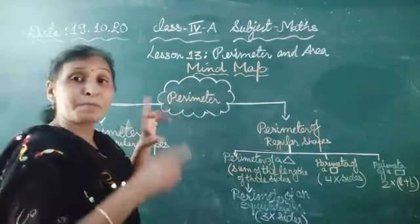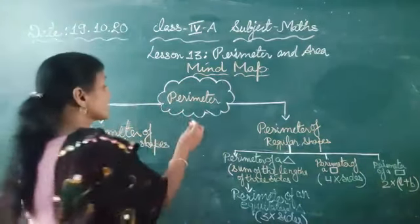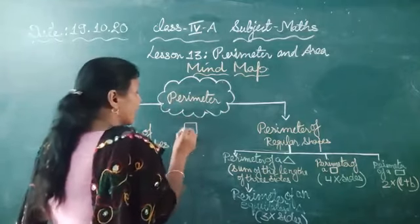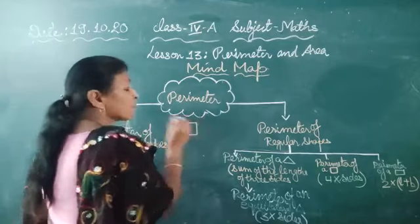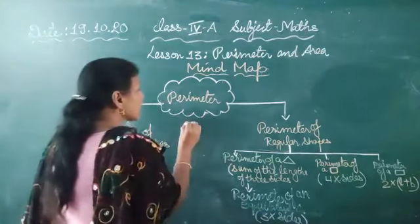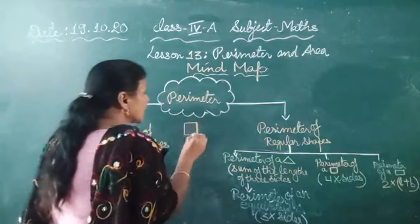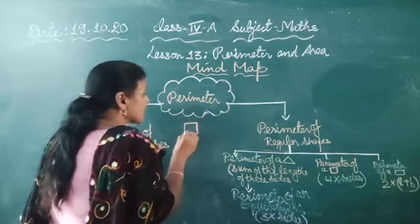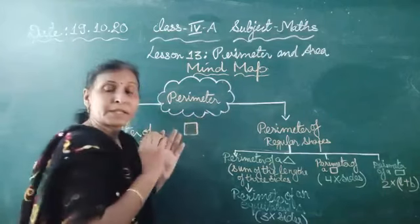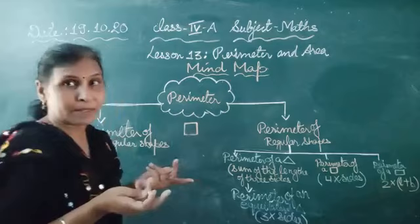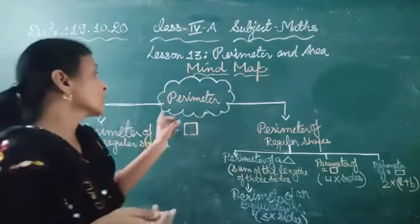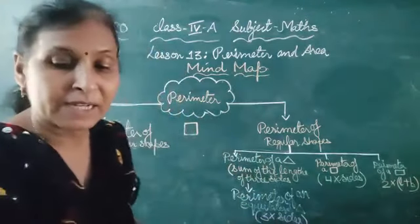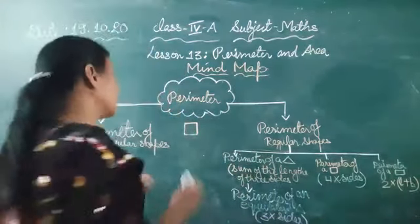Kisi bhi shape ke — just suppose ye shape liya hai aapko. Iska perimeter find out karna hai toh kaise find out karenge? In sum, all measurements given hoga, un sabko plus karna. Toh the sum of the boundary of the given figure — that is the perimeter.